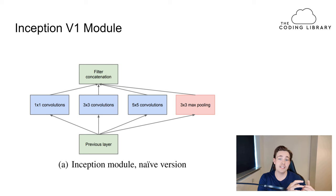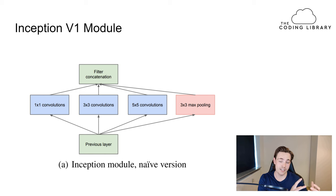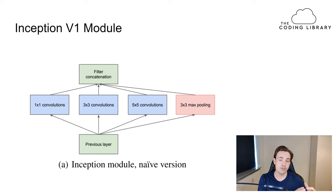The idea behind ResNet was to go deeper without adding that much complexity. InceptionNet, on the other hand, is actually about going wider instead of going deeper — we go wider in each of the individual layers within our modules.